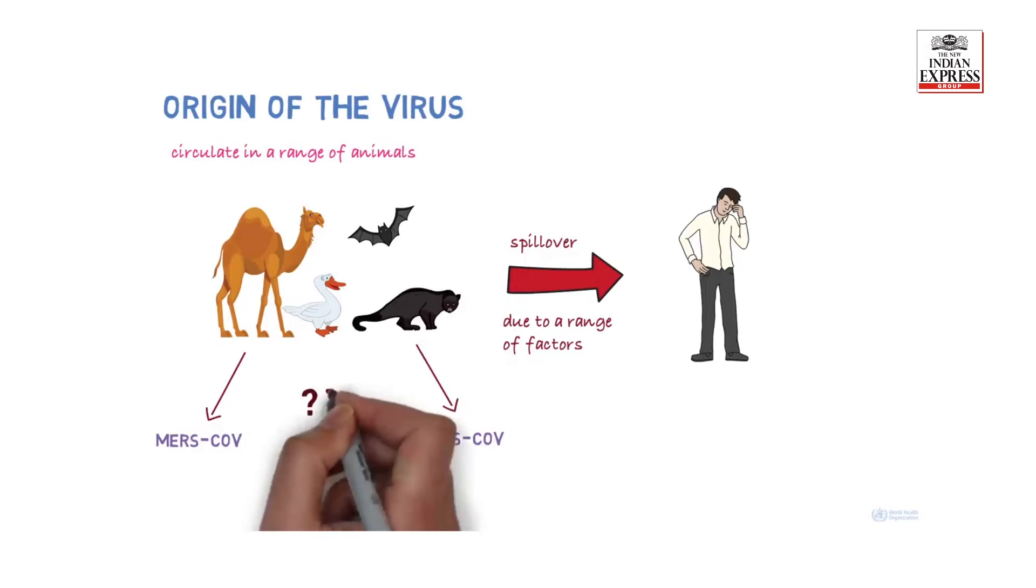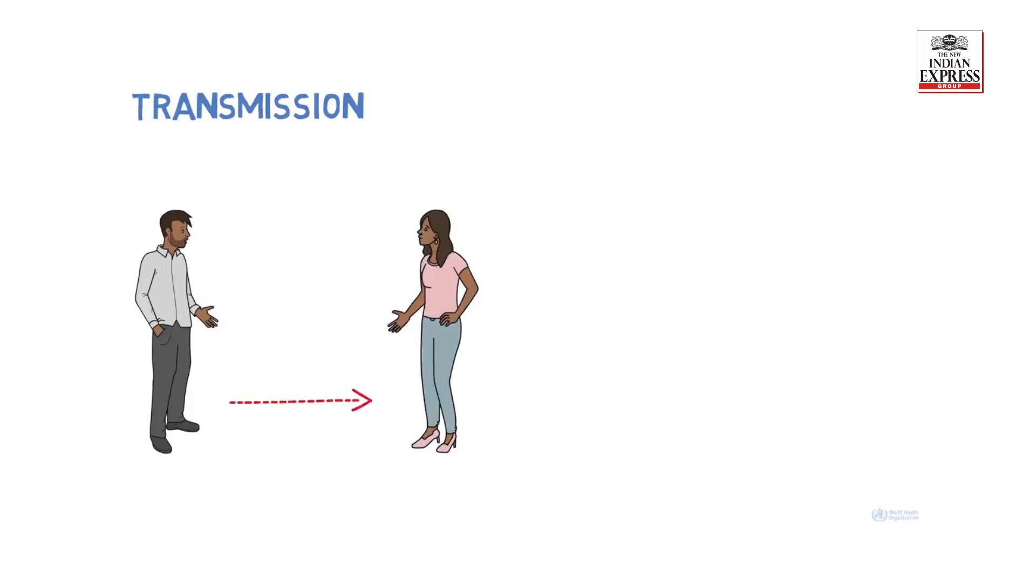The animal reservoir of the new coronavirus is not known yet. How does the disease spread? The disease can spread from person to person through droplets, when an infected person releases those droplets through coughing, talking, or sneezing, for example, when close to another person.